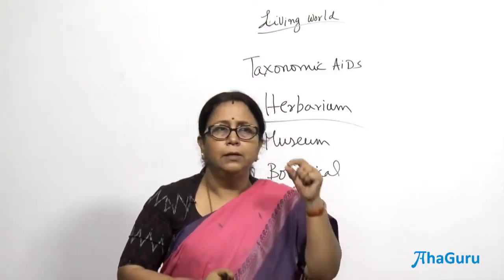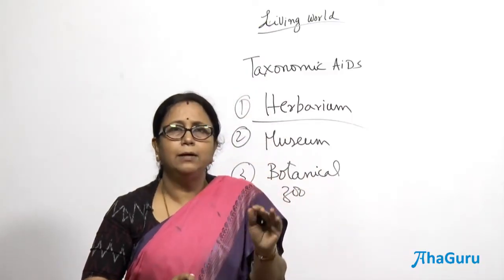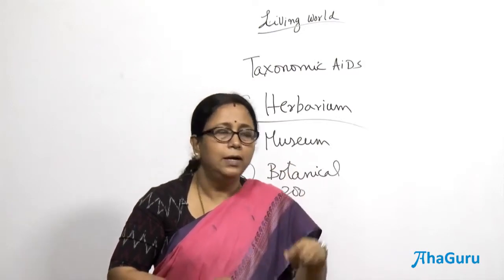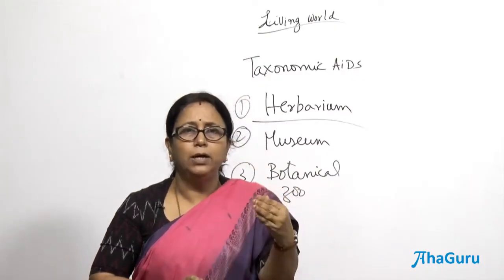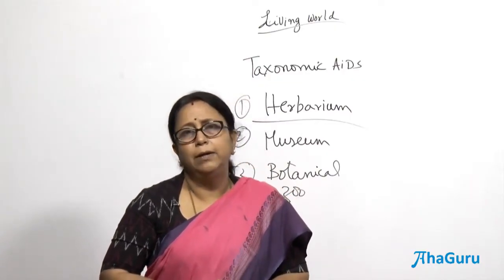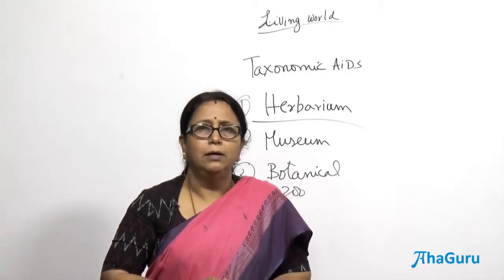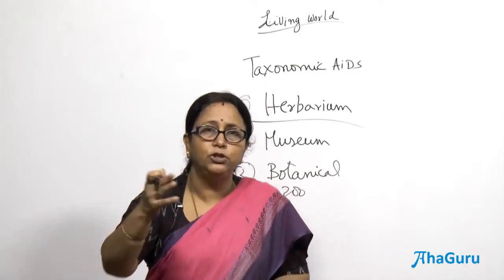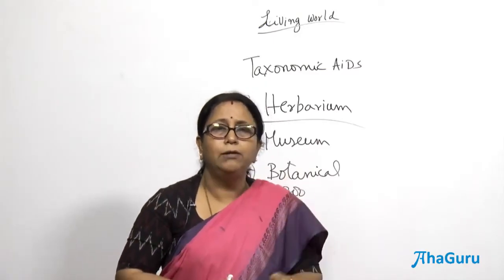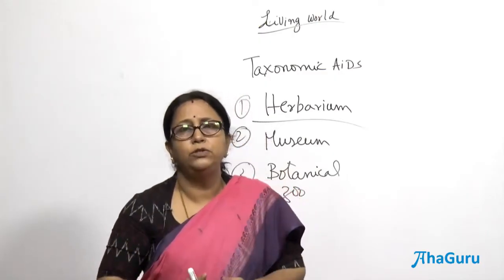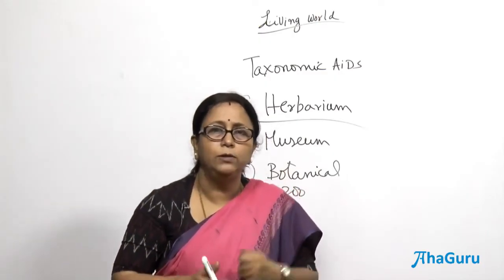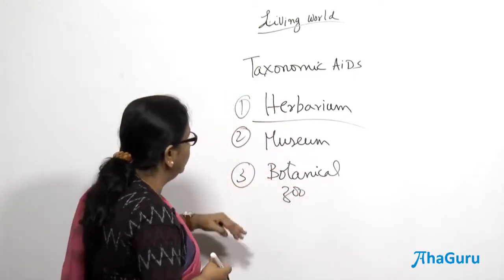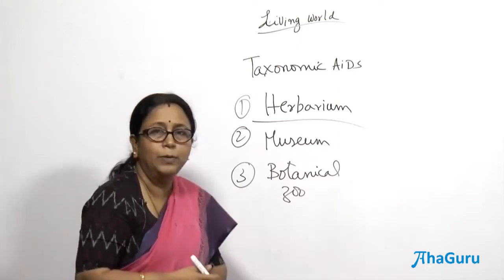One of the biggest botanical gardens is the Royal Botanical Garden at Kew. In India, we have the Indian Botanical Garden in Calcutta, and we also have another one at Lucknow — the Indian Botanical Research Institute — which is very popular and has a lot of species of living plants growing there. So botanical gardens and zoos also act as our taxonomical aids.